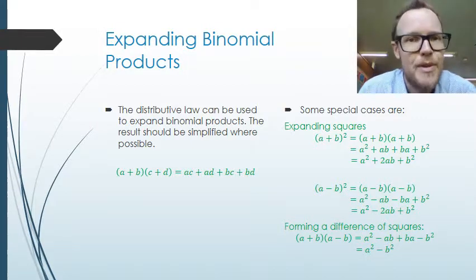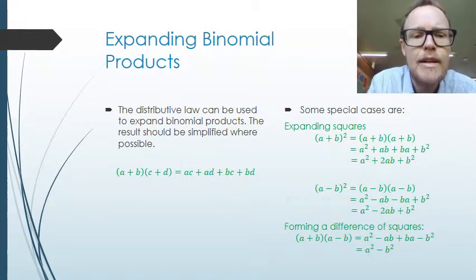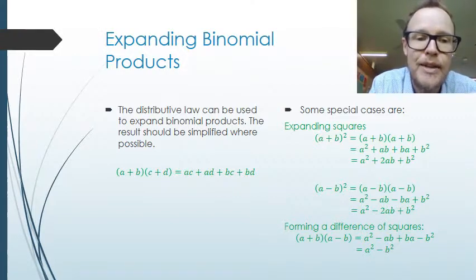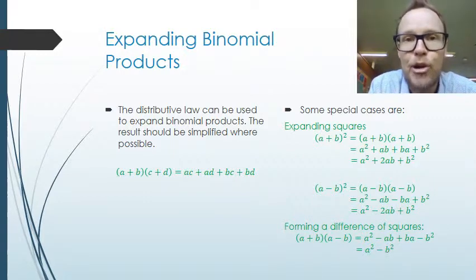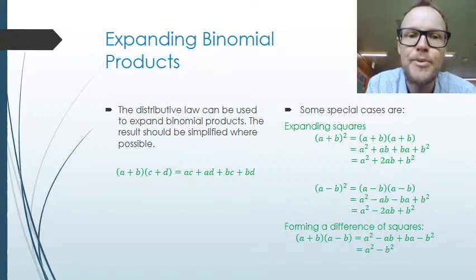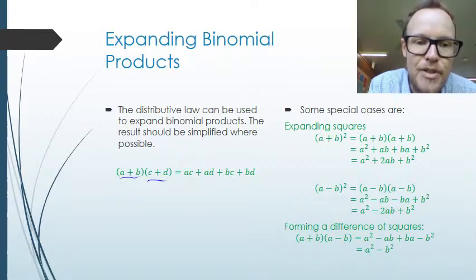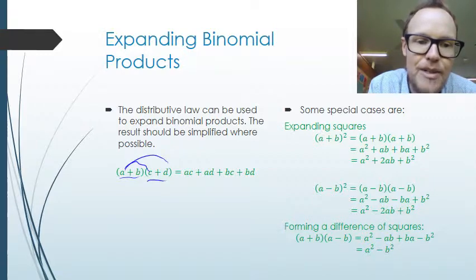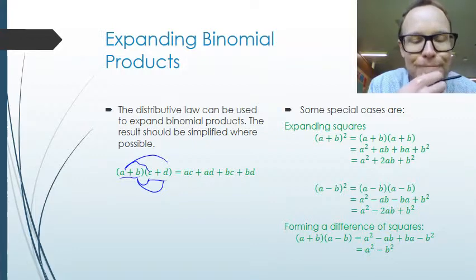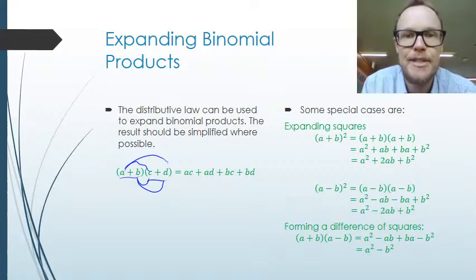When we're expanding binomial expressions, just as a reminder, we need to ensure that we multiply the values inside the brackets by each other. A binomial product means two values inside each bracket. So when we expand binomial products we multiply A times C, A times D, B times C, and B times D, to get AC plus AD plus BC plus BD.